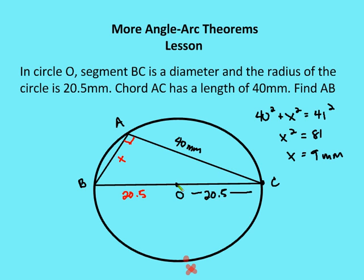The radius is 20.5 millimeters, so diameter BC equals 41 millimeters, which is the hypotenuse. Writing the Pythagorean theorem: 40 squared plus X squared equals 41 squared. Subtracting 40 squared from 41 squared gives 81, so X equals 9 millimeters. That's how you use these theorems to solve problems in this chapter. We're going to go on to more practice problems in the next edition, so come join us for more angle arc theorems in the next edition of OttenMath.